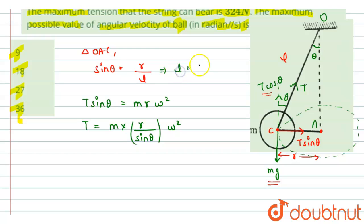So I can replace R by sin theta by L. So this T would be equals to M L omega square.